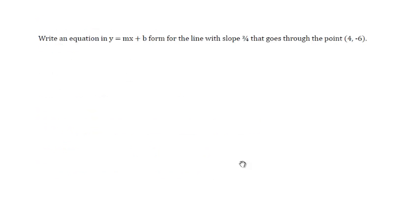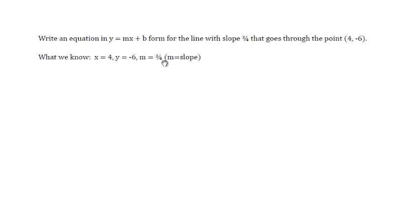Write an equation in y equals mx plus b form for the line with slope three-fourths that goes through the point (4, negative 6). What we know is that x is 4, y is negative 6, and the slope is three-fourths.